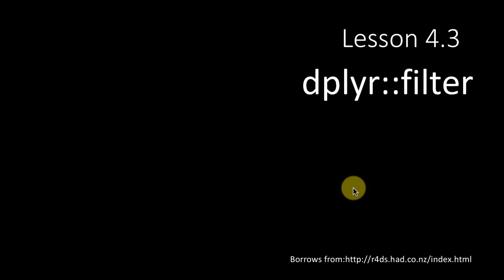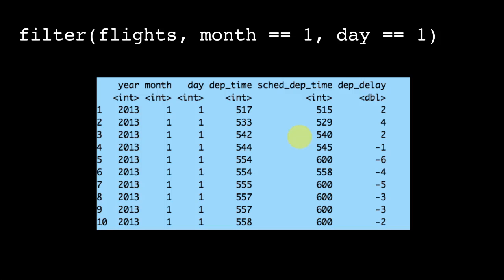So we take a look at the first of the significant dplyr functions: filter. You can do things like what is shown here. You can say filter flights. Recall that flights is a tibble contained in the package nycflights13.